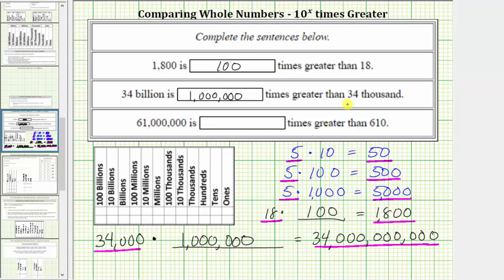Finally, the last sentence is: 61,000,000 is how many times greater than 610? To complete the sentence, we need to determine what we have to multiply 610 by in order to get a product of 61,000,000.